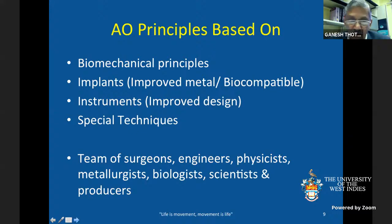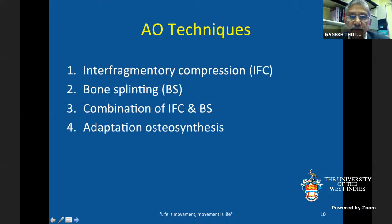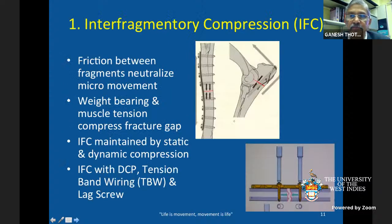It involved a team of surgeons, engineers, physicists, metallurgists, biologists, scientists, and manufacturers of implants. The AO techniques began with interfragmentary compression, bone splinting, combination of interfragmentary compression and bone splinting, and adaptation osteosynthesis. In plate osteosynthesis, one tries to bring about compression at the fracture site.